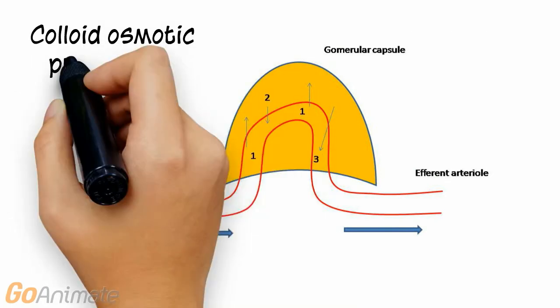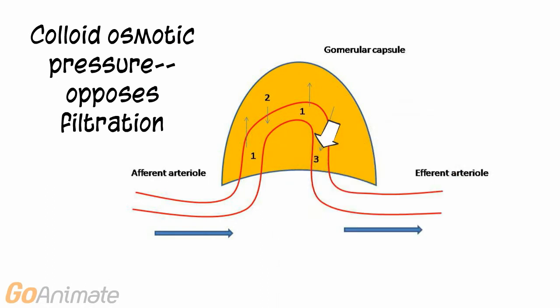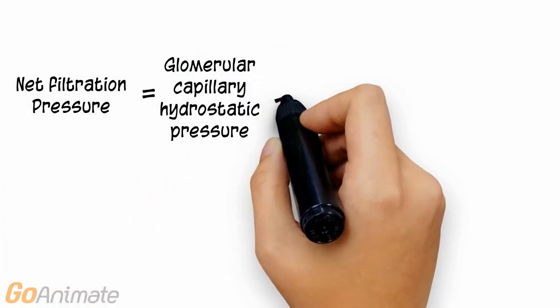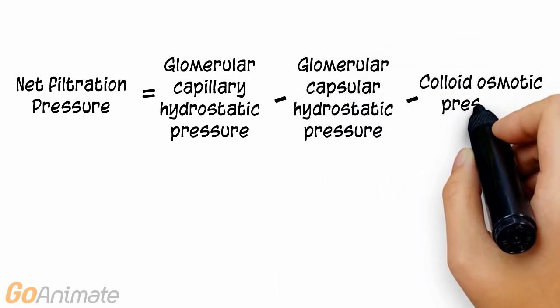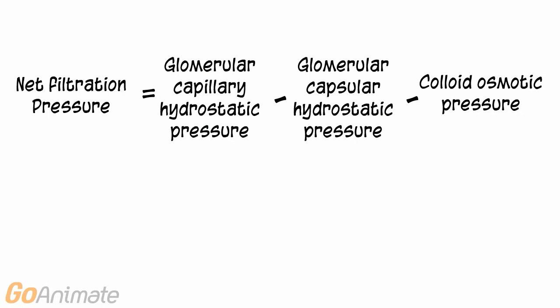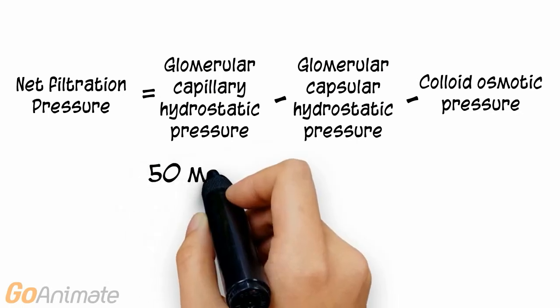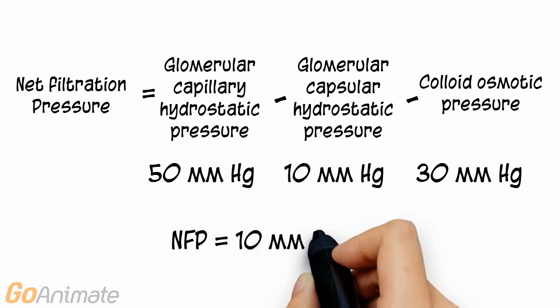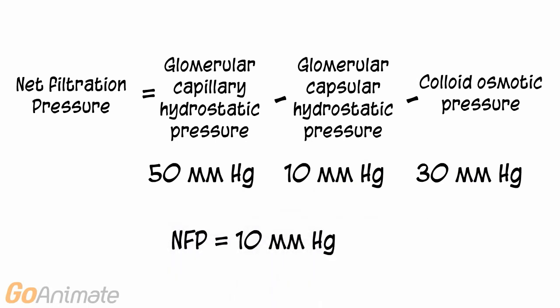Colloid osmotic pressure is produced by plasma proteins that act like a salt in the blood. They help to keep the plasma in the blood by creating a pulling force. All three pressures combine to form the net filtration pressure, the pressure that drives the filter. We calculate net filtration pressure by subtracting the two opposing pressures from the glomerular capillary hydrostatic pressure that favors filtration. The net filtration pressure is about 10 millimeters of mercury.